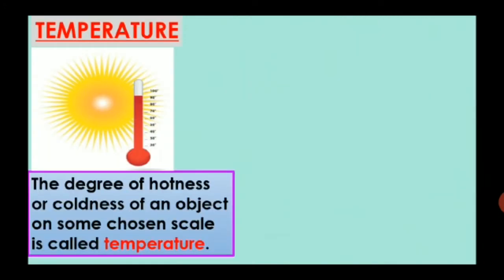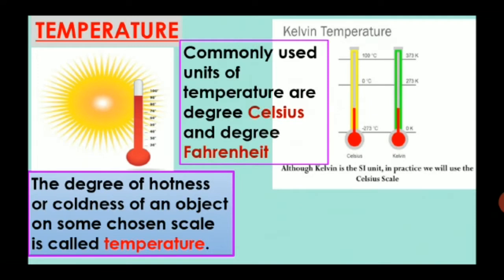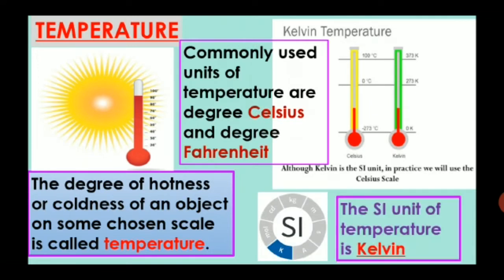So children, in our previous video, we discussed hotness or coldness. We can measure the degree of hotness or coldness by comparing it with a standard unit we all agree upon. Now we will see what actually temperature is. The degree of hotness or coldness of an object on some chosen scale is called temperature.